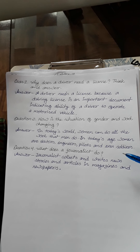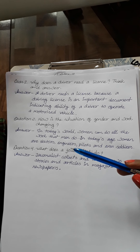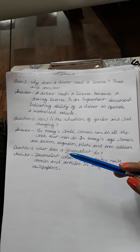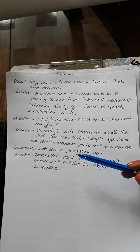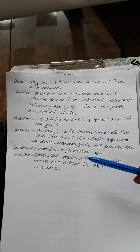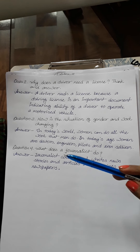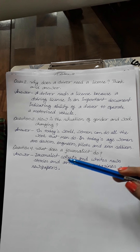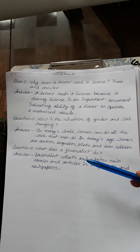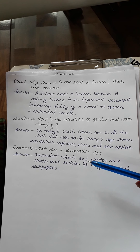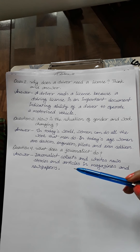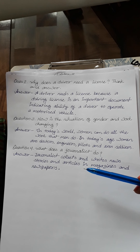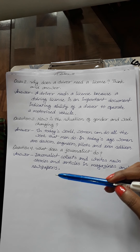Question 4: What does a journalist do? Answer: A journalist collects and writes news stories and articles in magazines and newspapers.